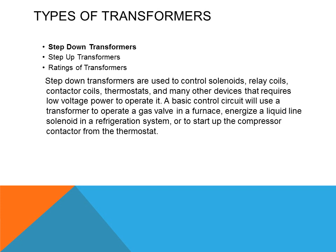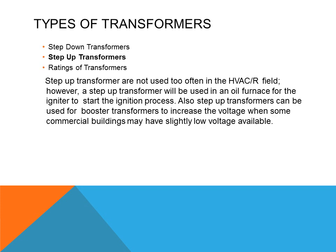Step-down transformers are used to control solenoids, relay coils, contactor coils, thermostats, and many other devices that require low voltage. A basic control circuit uses a transformer to operate a gas valve in a furnace, energize a liquid line solenoid in a refrigeration system, or start up the compressor contactor from the thermostat. Step-up transformers are not used as often in the HVAC field, but are used in oil furnaces for ignition and as booster transformers in commercial buildings with slightly low voltage.